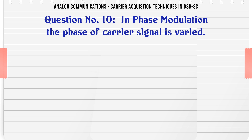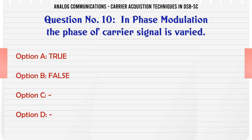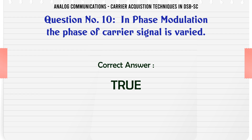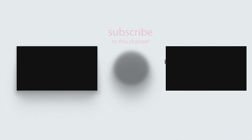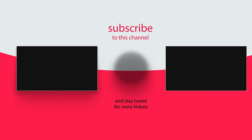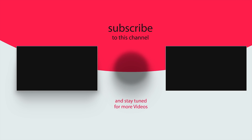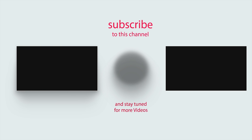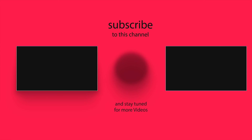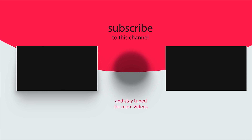In phase modulation, the phase of the carrier signal is varied. A. True. B. False. The correct answer is True.